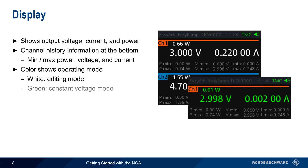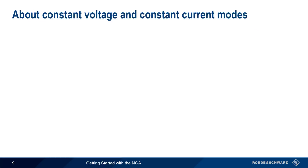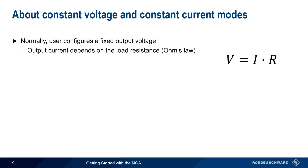Values in green indicate the channel is operating in constant voltage mode, and values in red indicate constant current mode. Let's stop for a minute to explain what we mean by constant voltage and constant current.